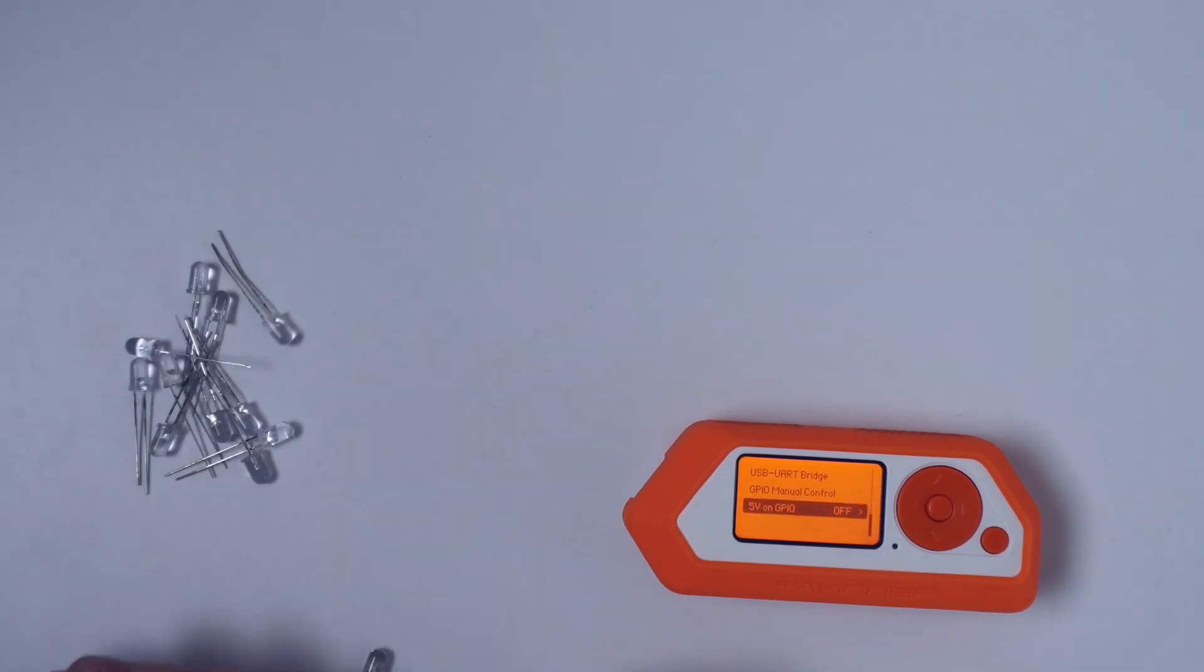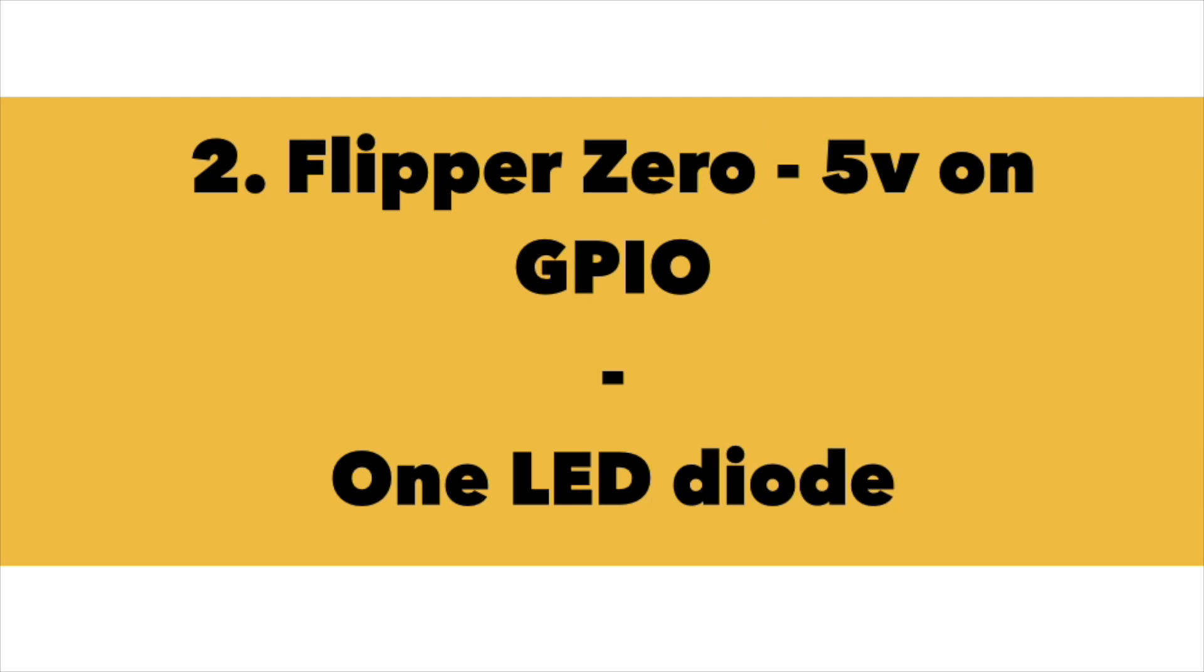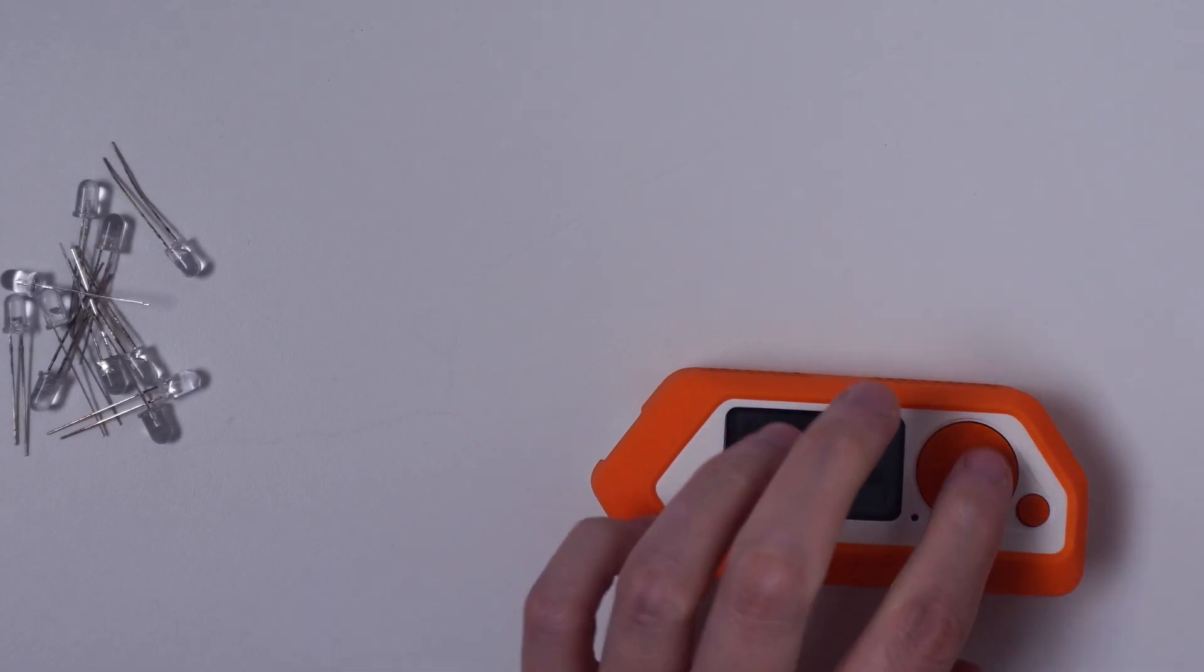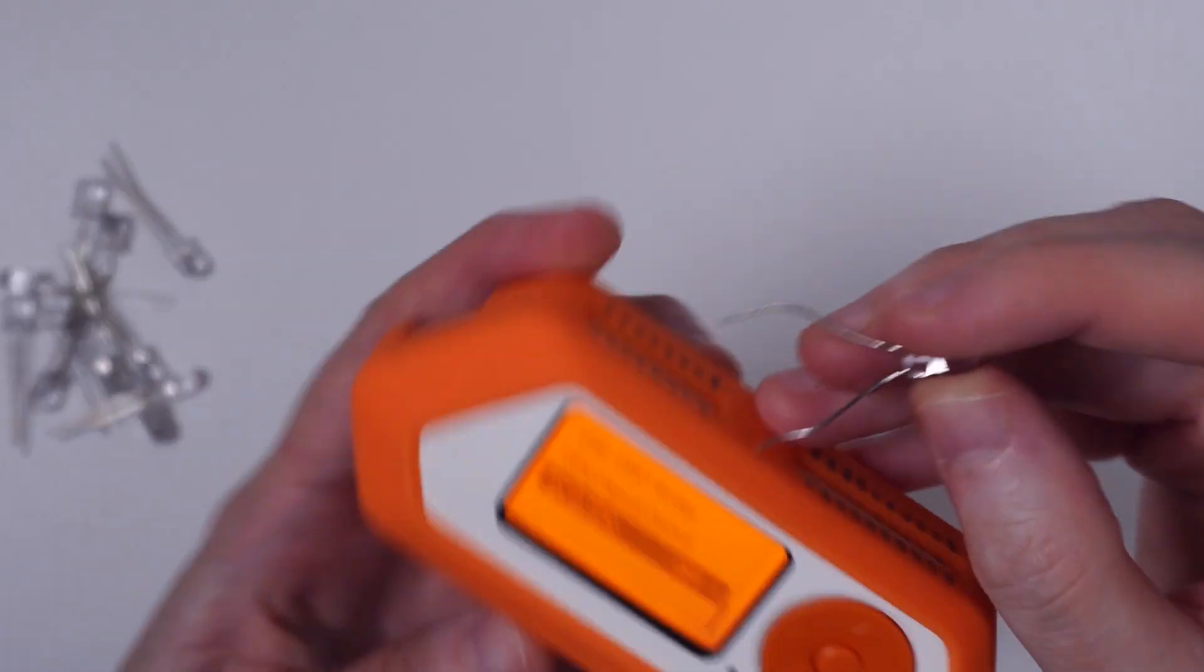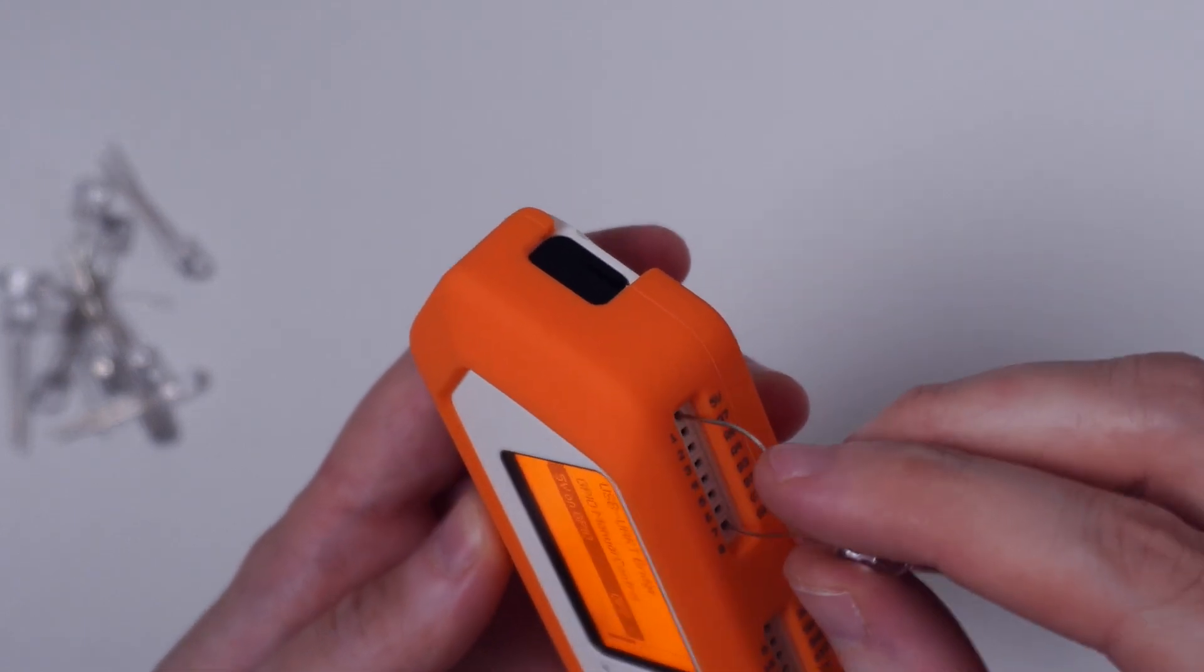So let's move now to the second test. Now we are going to do much simpler tests. We are going to take only one LED diode and control it through the same 5V on GPIO menu option.